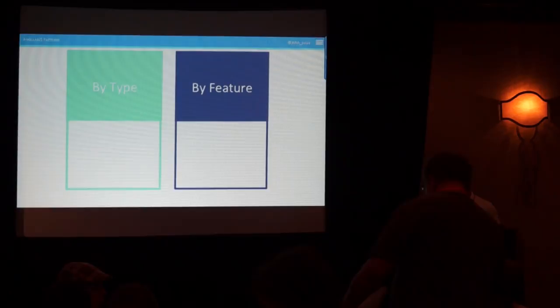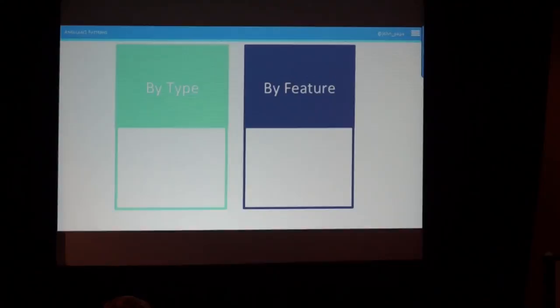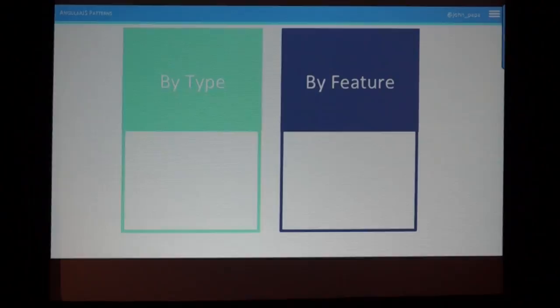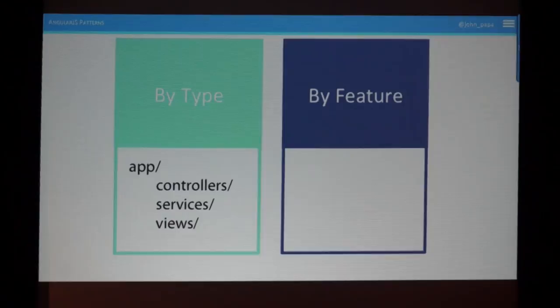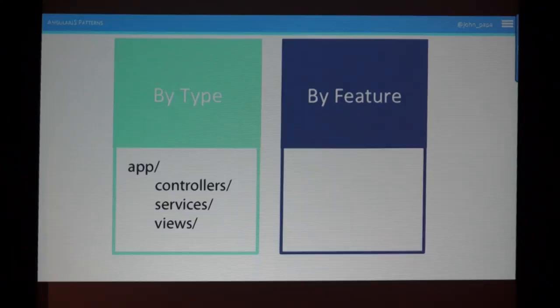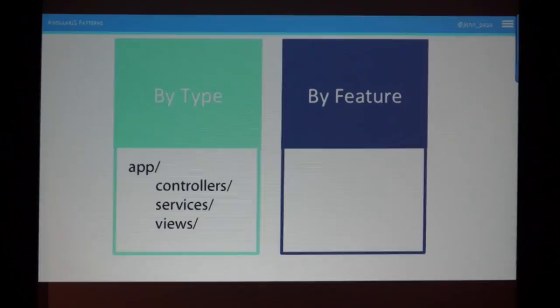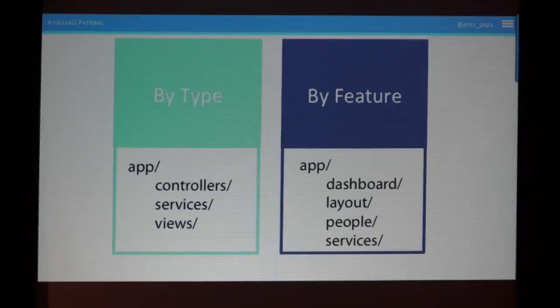The two main themes in structuring your app are by type and by feature. By type is what you'll see in most generators like the Yeoman generator for Angular — it creates everything by type, putting all your controllers, services, views, directives, and filters in their own folders. In some cases they just create a file like directives.js or controllers.js where you stick every controller in one place — great for simple demos, but harder to refactor as your application grows.